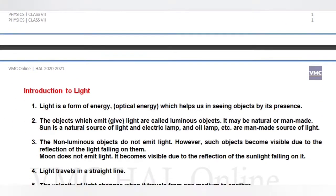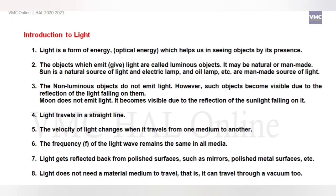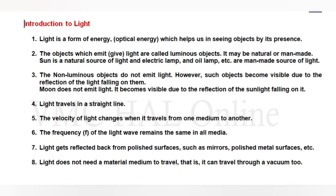So what is light? Light is a form of energy which helps us in seeing the objects by its presence. This is an optical energy which helps us to show any object.